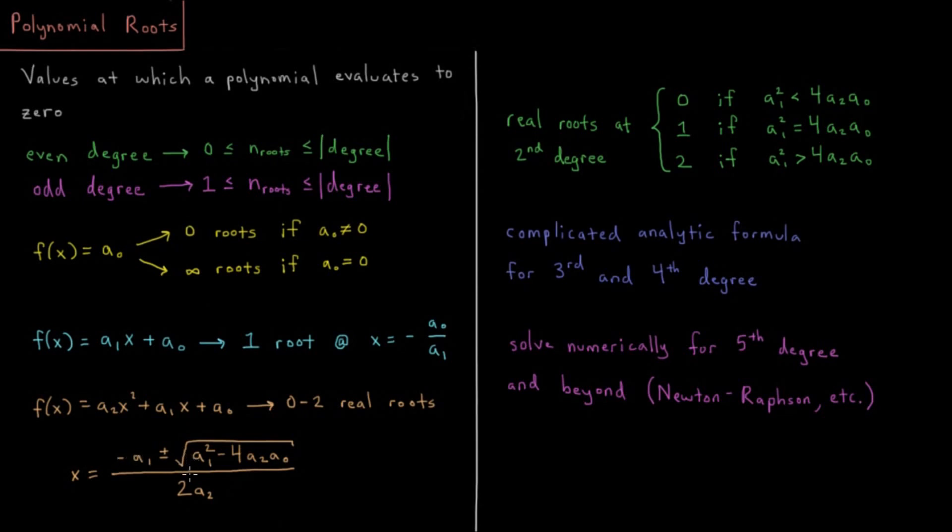And we have this value here called the discriminant, and depending on whether this is positive, negative, or zero, is whether it's going to tell us the number of real roots that we end up getting.